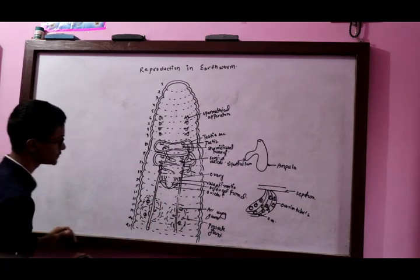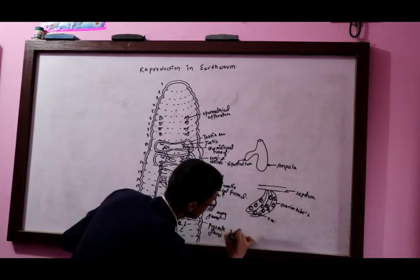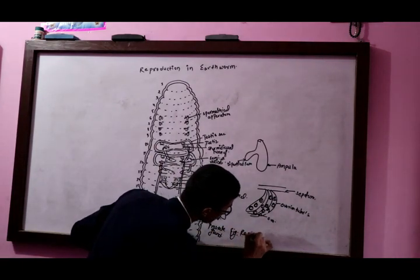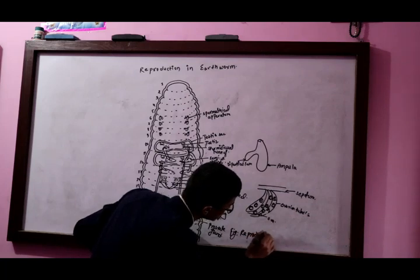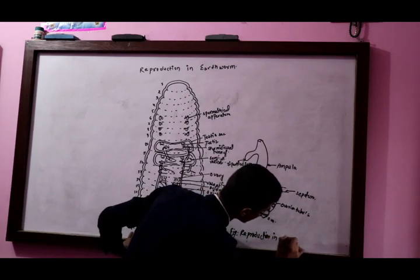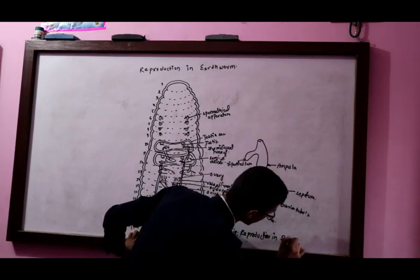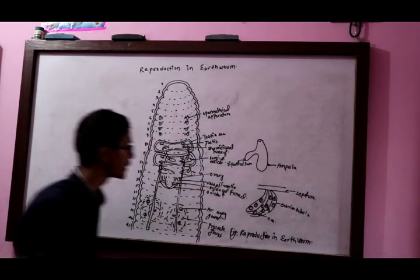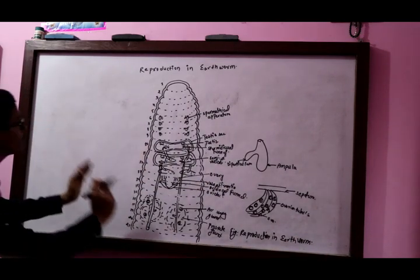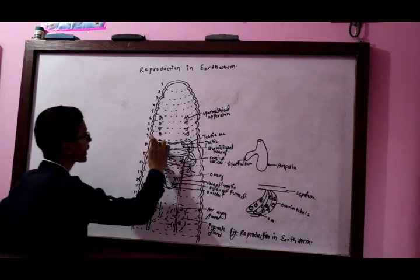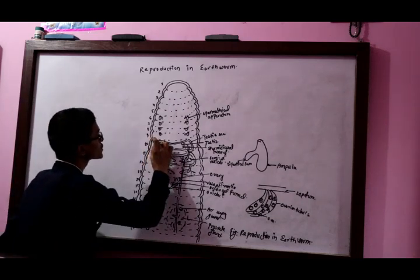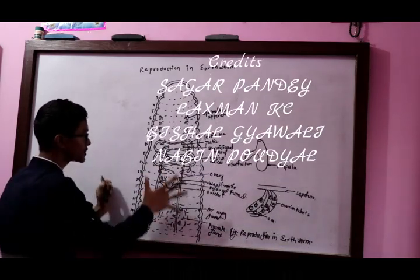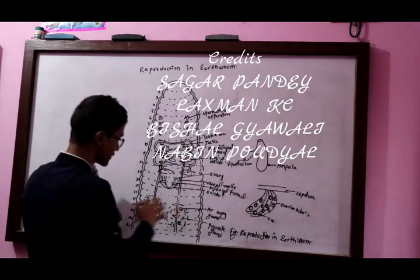So this is the figure of reproduction — reproduction in earthworm. E-A-R-T-H-W-O-R-M, reproduction in earthworm. The figure shows one other. We have 10 segments here. Thank you.